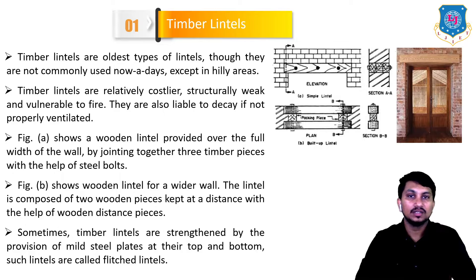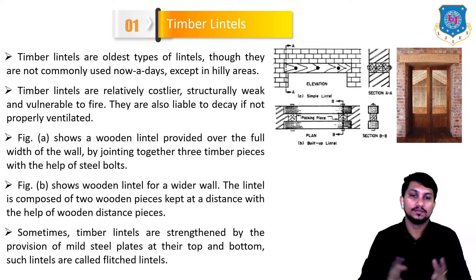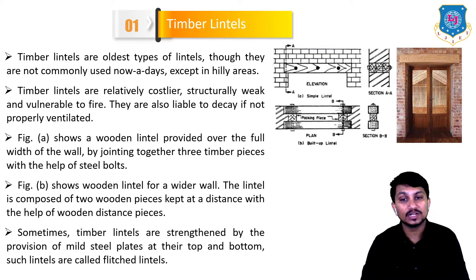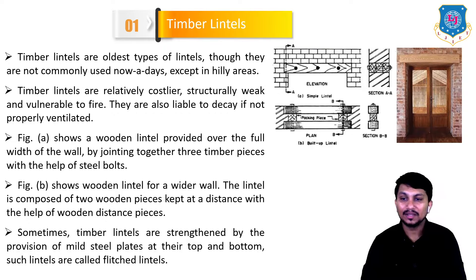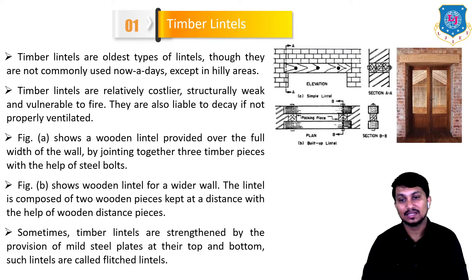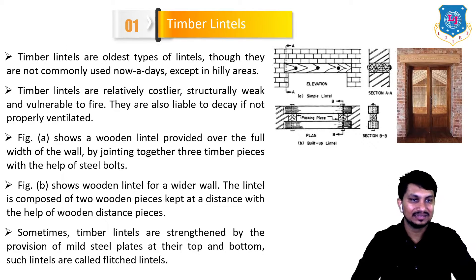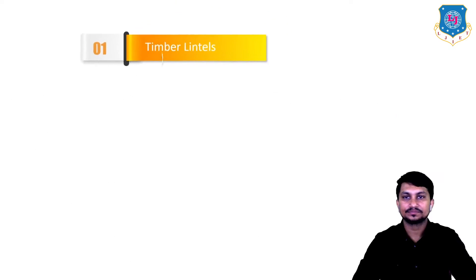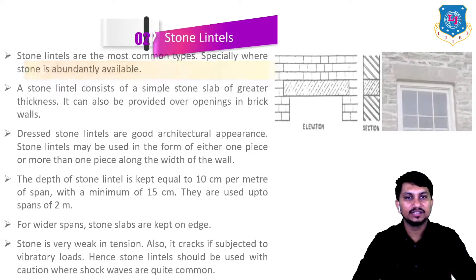Figure B shows a wooden lintel for a wider wall — the lintel is composed of two wooden pieces kept at a distance with the help of wooden distance pieces. Sometimes timber lintels are strengthened by the provision of mild steel plates at the top and bottom; such lintels are called flitched lintels. Timber lintels are basically used in hilly areas.